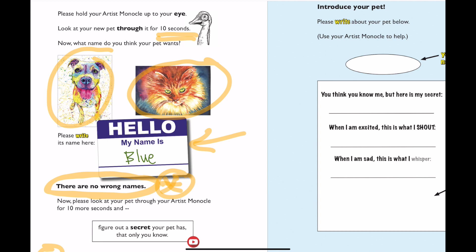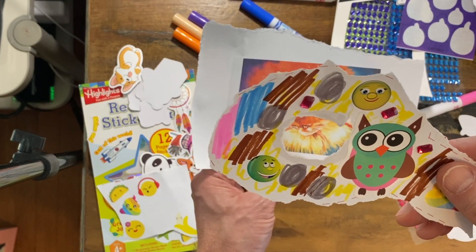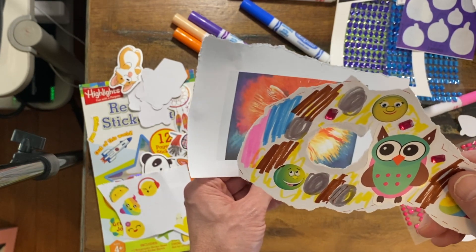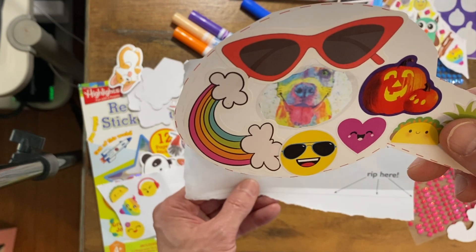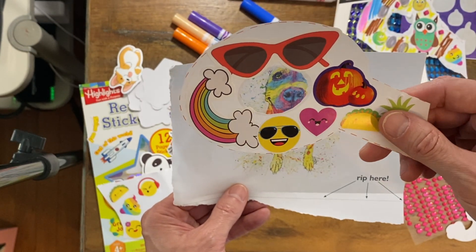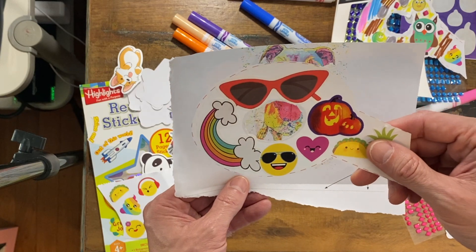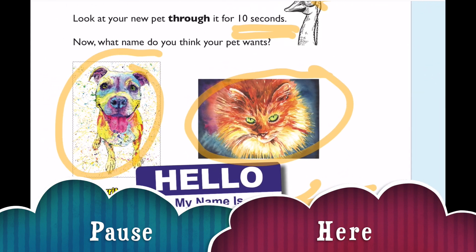Now you've got the name. Look at your pet through the monocle again — is it the dog, is it the cat? Look at it for 10 more seconds and figure out a secret that only you know, a secret that your pet has that only you know. You can pause this video, look at your animal for 10 seconds — what is its secret, a secret that only you know?